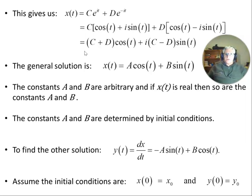We can write that as a general solution. x of t equals A cos t plus B sin t. The constants A and B are arbitrary. And if x of t is real, then so are the constants A and B. So A is c plus d. B is i times (c minus d). The constants A and B are determined by initial conditions, but they're both arbitrary.